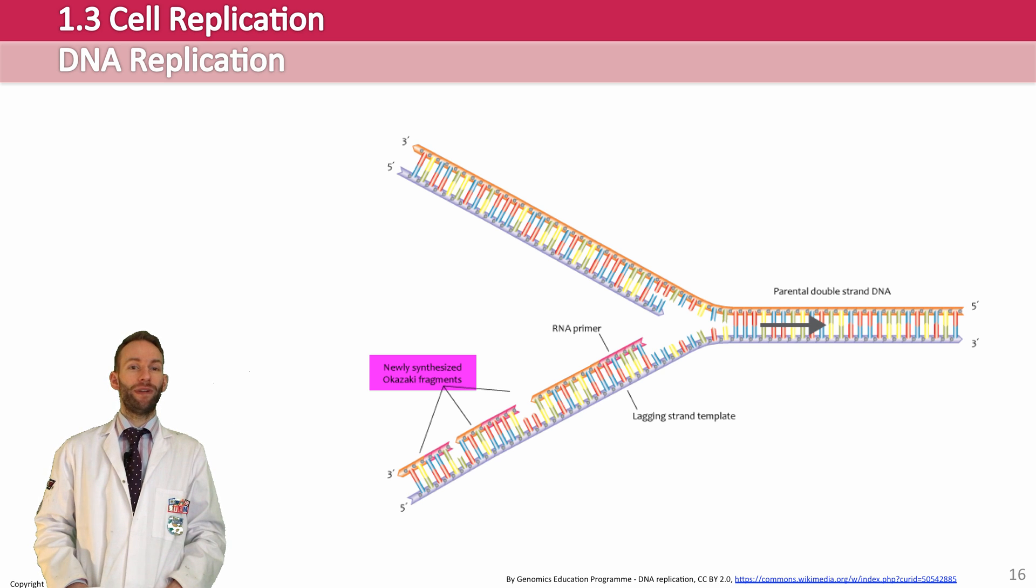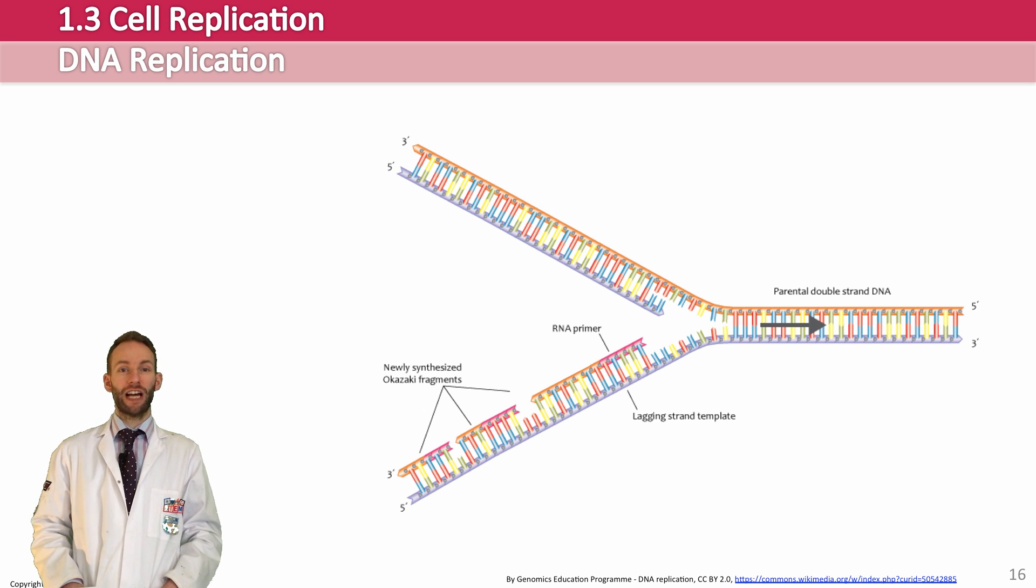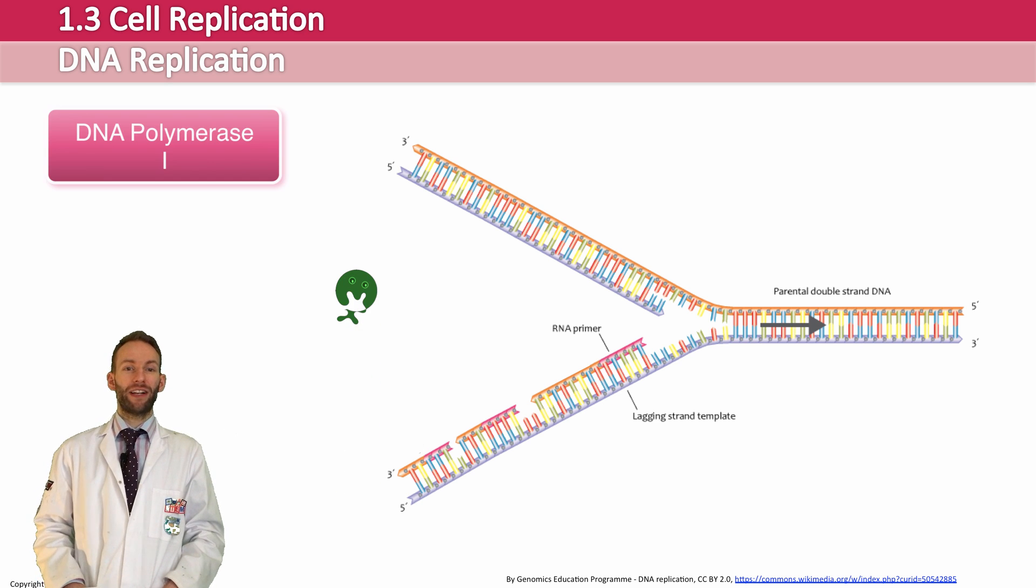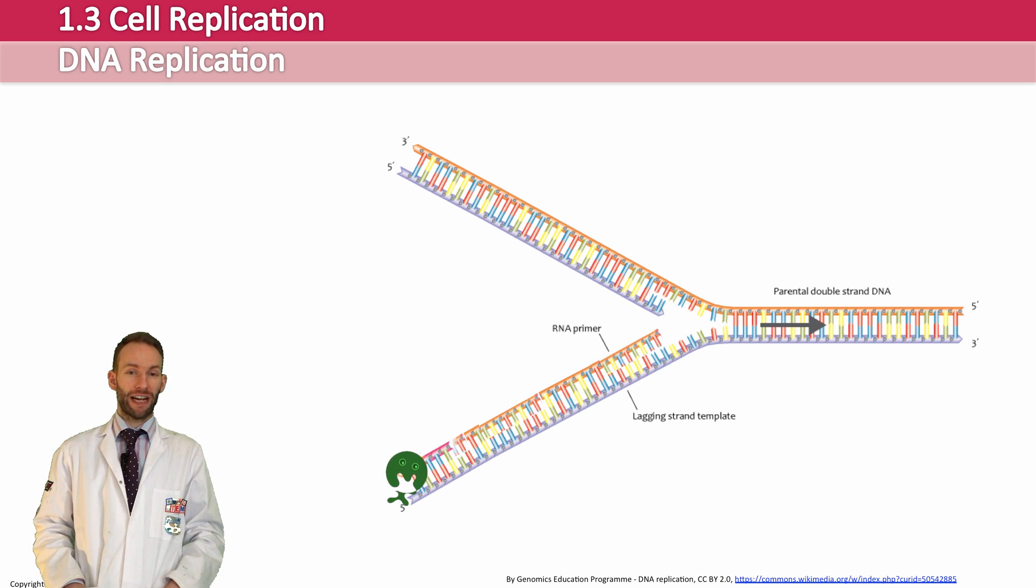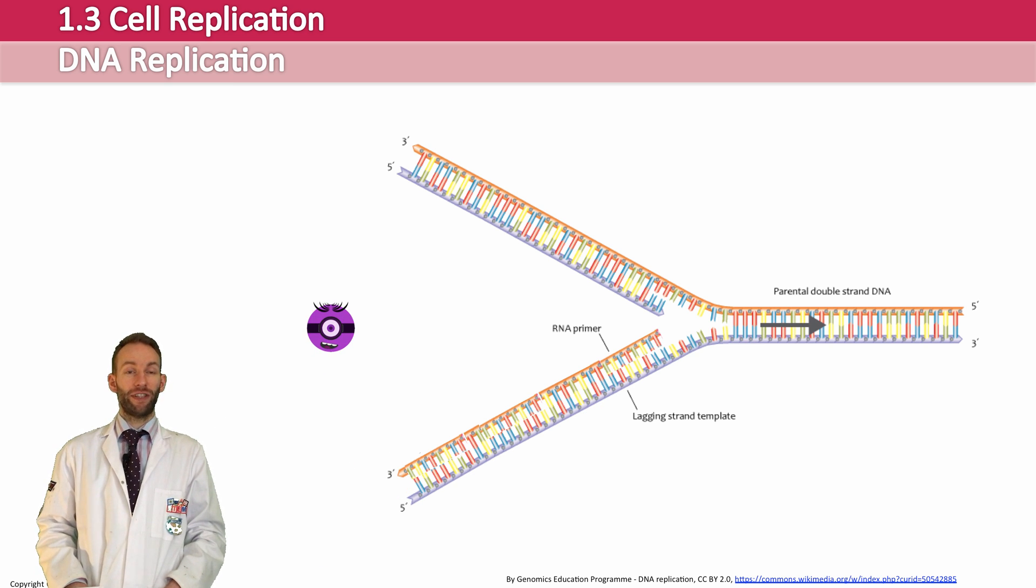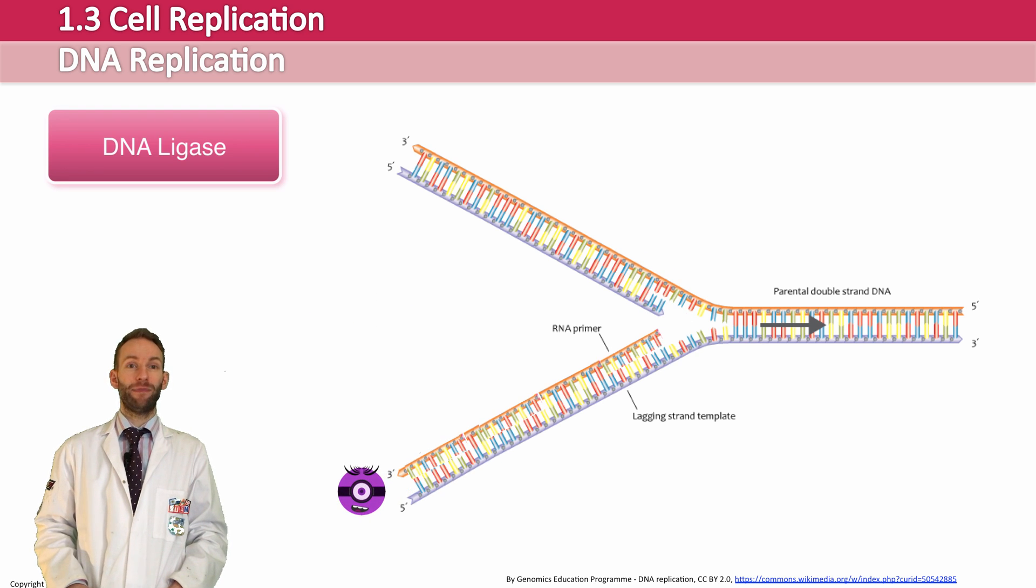And the next job is to remove these RNA primers. And we use a different type of DNA polymerase. For this one, this one's called DNA polymerase one, and that goes along and replaces all the primers. So once we got rid of the primers and we've got our Okazaki fragments, the last job to do is to just go along and stitch all those bits of DNA together, which is done with a final enzyme called DNA ligase, which uses ATP. And then that is the lagging strand complete.